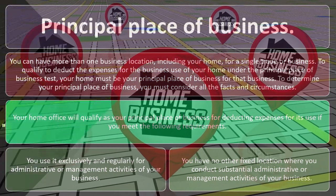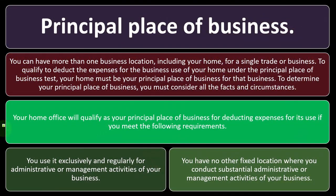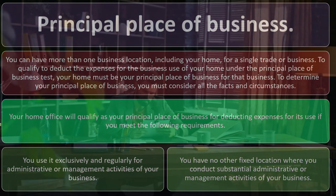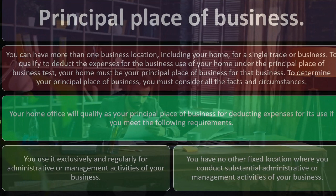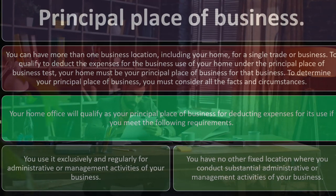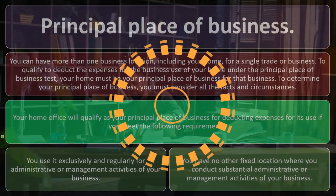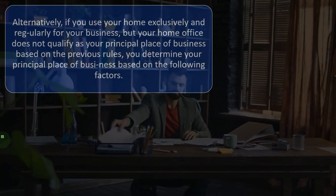You must also have no other fixed location where you conduct substantial administration or management activities of your business. If you have another office elsewhere that you actually use, and you only come to your home office twice a year to check emails, then your home is not your principal office location either — and it might not qualify for the principal place of business deduction.